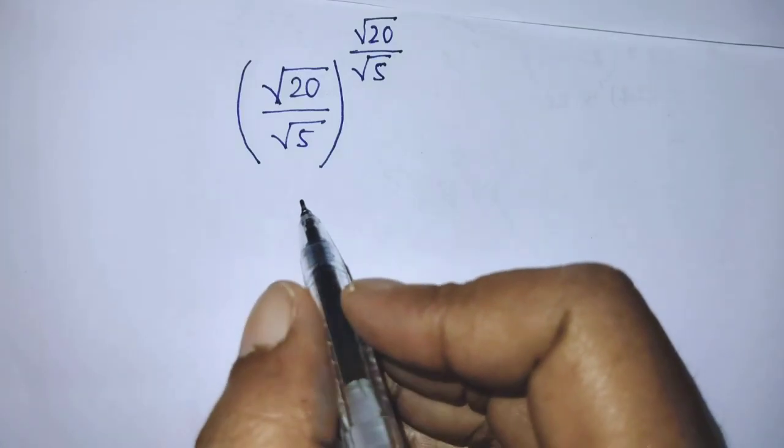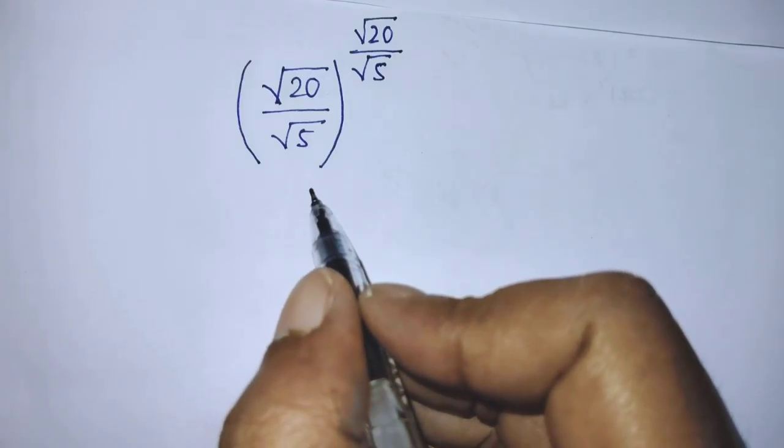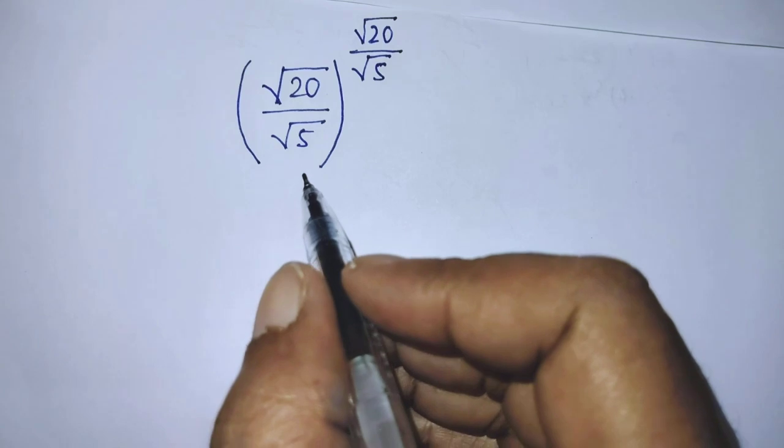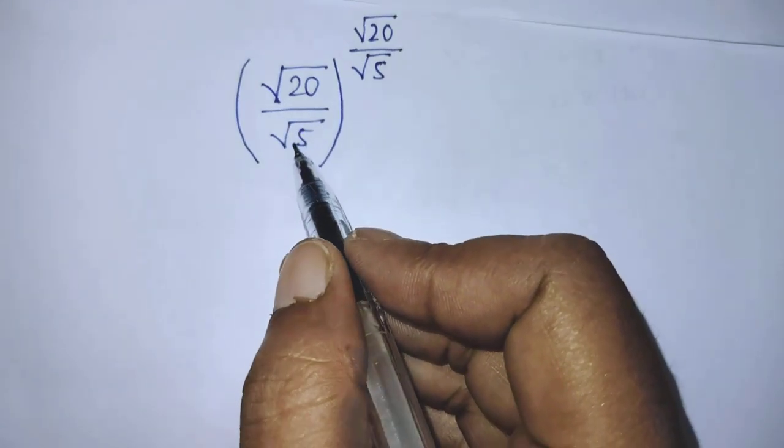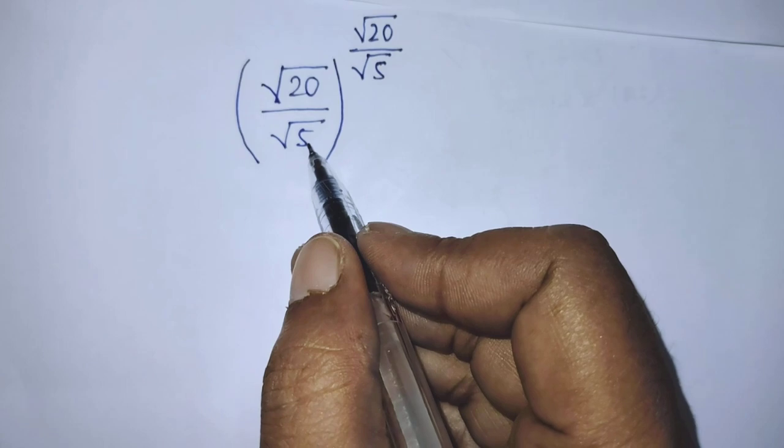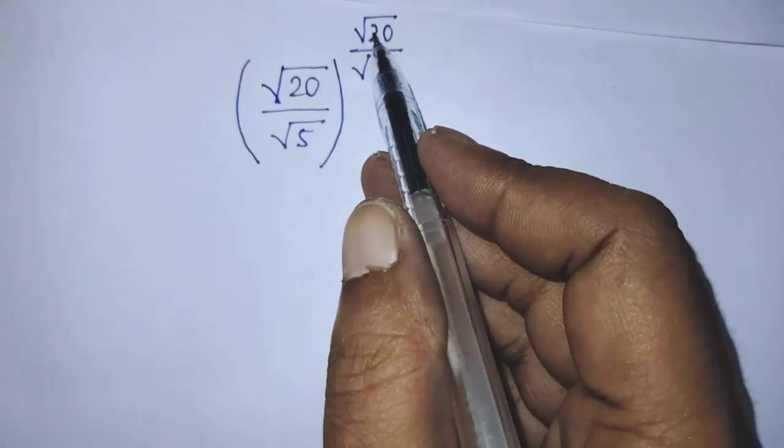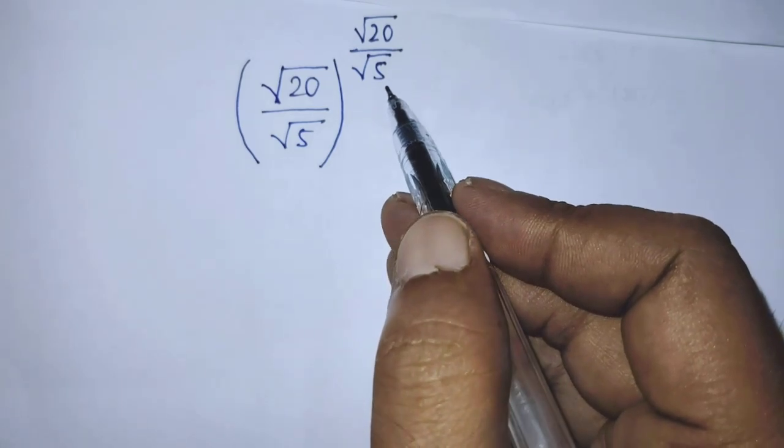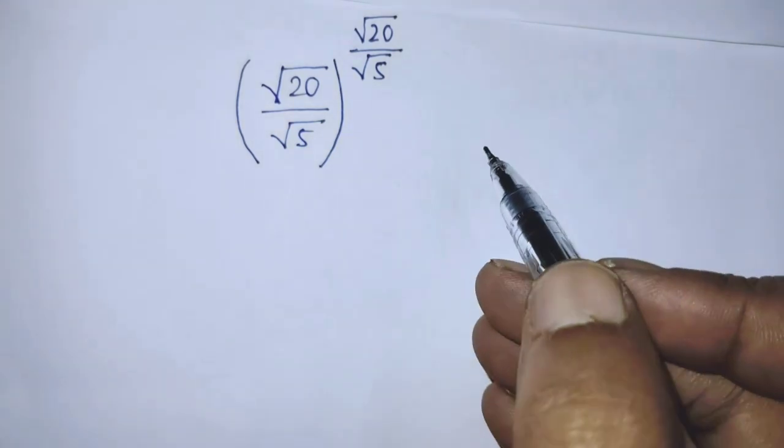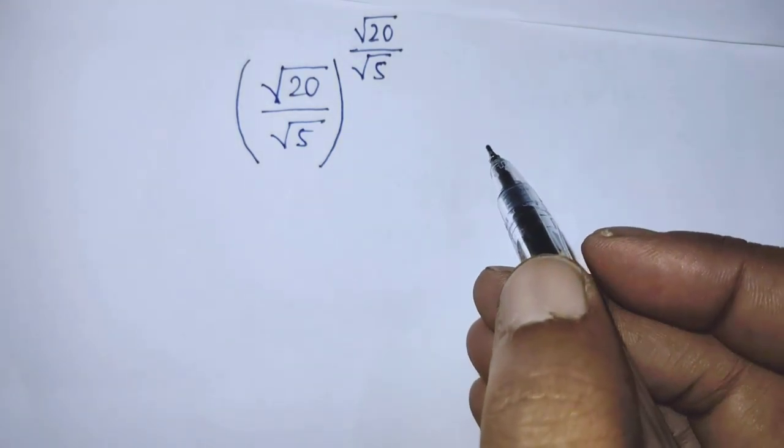Hello guys, you are welcome. Today we're solving this math problem: square root of 20 over square root of 5, whole to the power square root of 20 over square root of 5. Today I'm telling you how to simplify this exponential form.